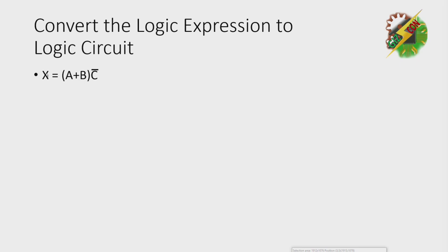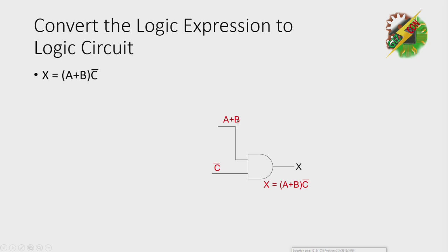Next, let's try to convert this equation: X equals (A plus B) times C-bar. We need A plus B as one input and C-bar as the other. To generate A plus B, you need an OR gate. And to generate C-bar, you need an inverter gate.